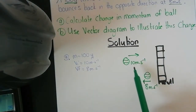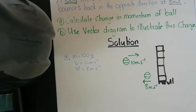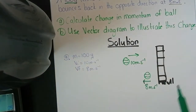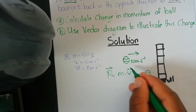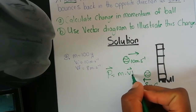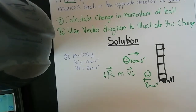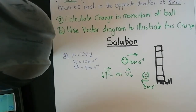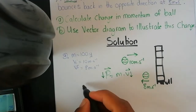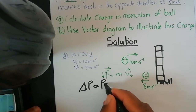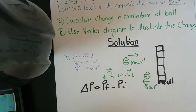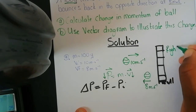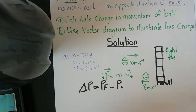The velocity changed from 10 to 8, and since momentum and velocity are proportional — p equals mv — the momentum also decreased. We are asked to calculate the change in momentum. The formula is: change in p equals p final minus p initial. Choose your direction: I'm choosing right as positive.